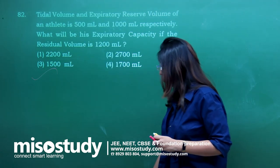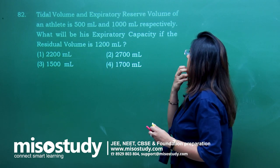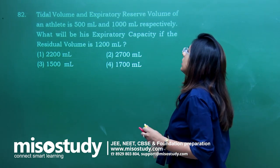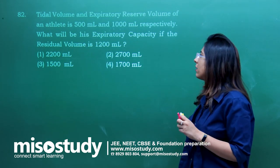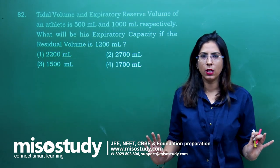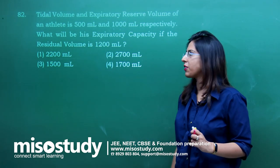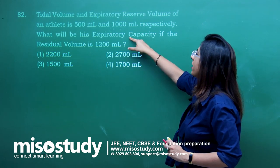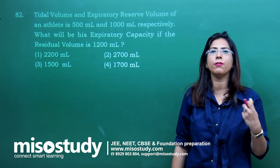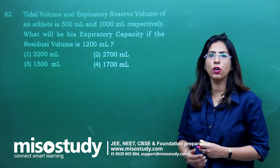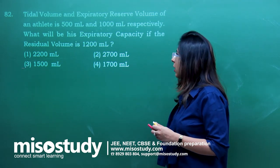Question number 82 — tidal volume and expiratory reserve volume of an athlete are 500 ml and 1000 ml respectively. What will be the expiratory capacity if the residual volume is 1200 ml? Expiratory capacity is the addition of tidal volume and expiratory reserve volume: 500 + 1000 = 1500 ml. The correct answer is option 3 — 1500 ml.